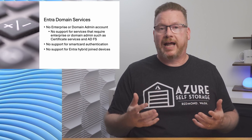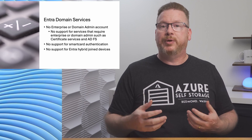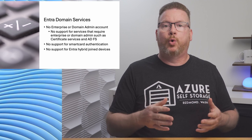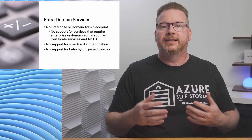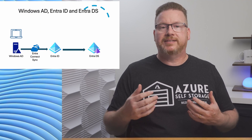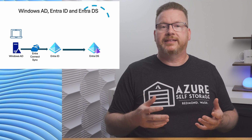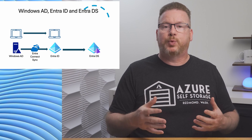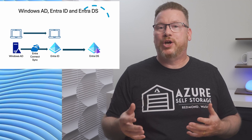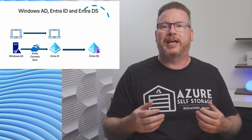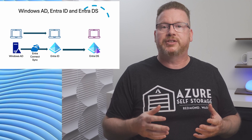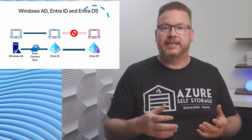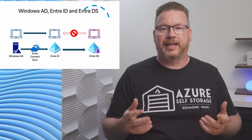Next is no support for hybrid Entra ID joined computers. A computer can be Active Directory Domain Services joined — either Windows AD or Entra Domain Services — or joined to Entra ID. If we have a device that's a member of a Windows AD domain, we can replicate that to Entra ID with Entra Connect Sync to create a hybrid Entra ID joined device, represented in two directories. However, there's no arrow going from Entra Domain Services to Entra ID. Devices joined to Entra Domain Services cannot be hybrid Entra ID joined — that requires Entra Connect Sync, which is not supported with Entra Domain Services.